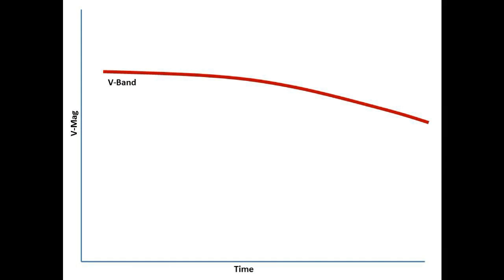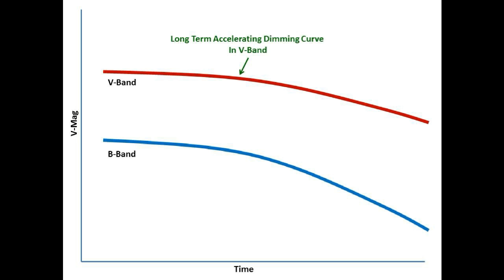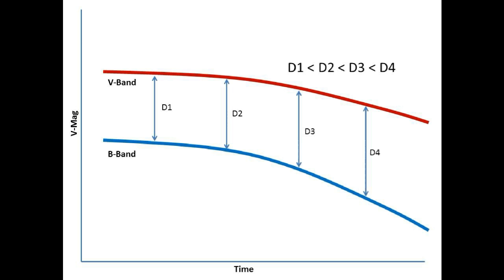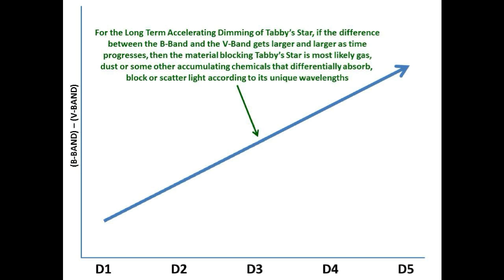Fortunately, David Lane also took data in the B-band at the same time he took the V-band data. So suppose the red curve represents the V-band measurements and the blue curve represents the B-band measurements, both taken over those same 10 months. If the long-term dimming is being caused by accumulating dust, gas, or other volatiles, the blue B-band curve should slope down faster than the red V-band curve. Therefore, the distance between the two curves should increase as time progresses — d1 less than d2 less than d3 less than d4 less than d5, and so on.